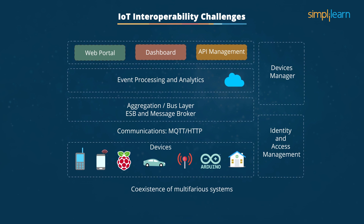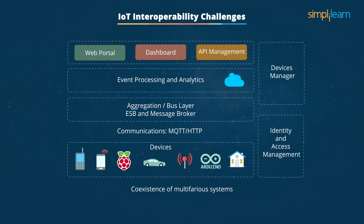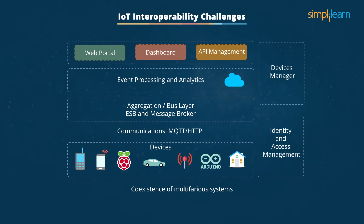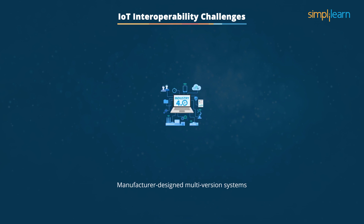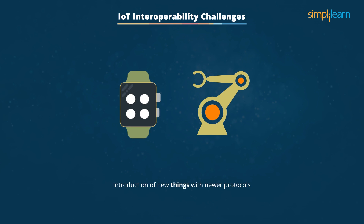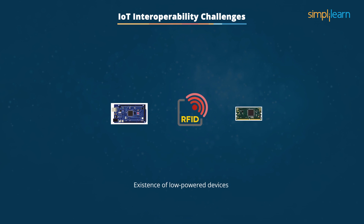The reasons for these challenges include the coexistence of multifarious systems — devices, sensors, equipment, etc. — that interchange location-time dependent information in varied data formats, languages, data models, constructs, data quality, and complex interrelationships. There are also multi-vision systems designed by manufacturers over time for varied application domains, making formulation of global agreements and commonly accepted specifications very difficult.